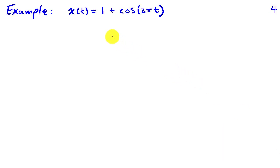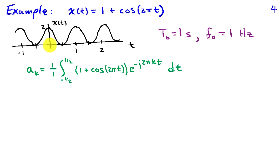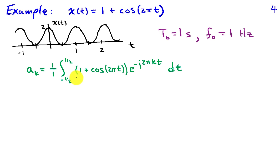Now suppose that x(t) is 1 plus cosine of 2πt. Our first step is to graph x(t): it has a cosine shape offset by one unit in the positive direction, so it goes from 2 to 0 rather than between minus 1 and 1. The fundamental period is 1 second, so the fundamental frequency is 1 hertz. Since I have the same definition for x(t) over any interval, I'll use the interval from minus 1/2 to 1/2, and the integrand is the quantity (1 + cos 2πt) times e to the minus j2πkt dt, with f0 equal to 1.